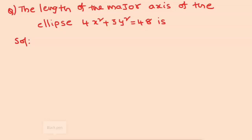Hi everyone, welcome to Allous Universe Master Class. Now we discuss coordinate geometry short questions so we can solve the questions easily for EAMCET exams. The length of the major axis of the ellipse 4x squared plus 3y squared equal to 48 is — first we will convert to standard form of the ellipse.